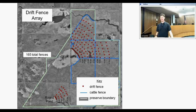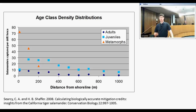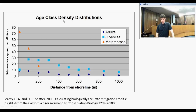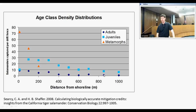This data is from Olcott Lake, 2005–2006, breaking densities between the three age classes we can visually identify. The different age classes have very different density distributions: metamorph salamanders are concentrated right at the pond edge; juveniles have their highest density slightly farther out; and adults have their highest density right at the pond edge but tail off much more gradually than metamorphs. We wanted to find a way to combine these three different density curves into a single curve representing how important habitat is to the salamander population.